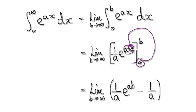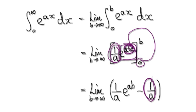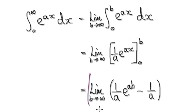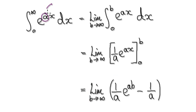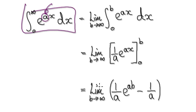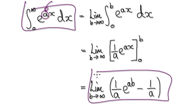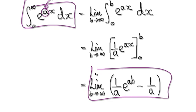Then put 0 into x: 0 times a will be 0, and e to the power of 0 will be 1, so 1 times this thing will just be that thing. So once you get to this stage here, you can answer the question of what values of a will allow this thing to converge.